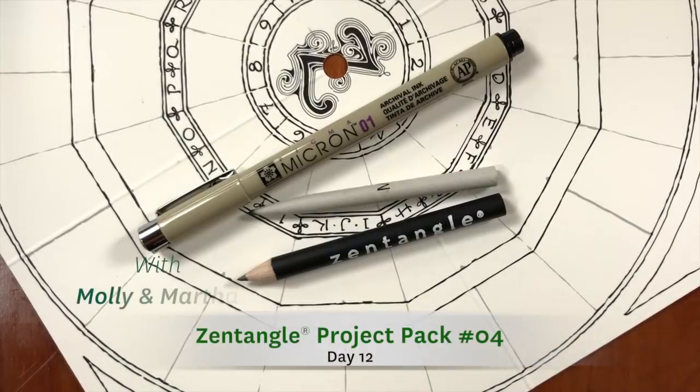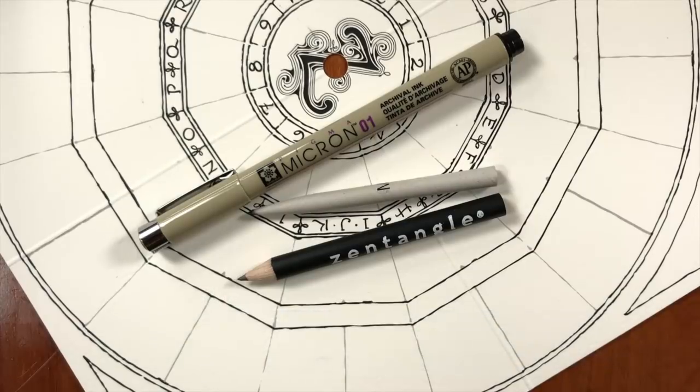Welcome to the Zentangle Project Pack series. We're ready for another lesson in this Project Pack. I'm Molly. I'm Martha. And this is part of Project Pack 04, designed around a specific project we are calling the Zentangle Spinner. We're using our annual 12 Days of Zentangle series to share 12 consecutive days of lessons with you to guide you along in filling this spinner with tangles. Today is our 12th day in the series. But if you are watching these after the day they are posted, you can easily do these lessons in any order.